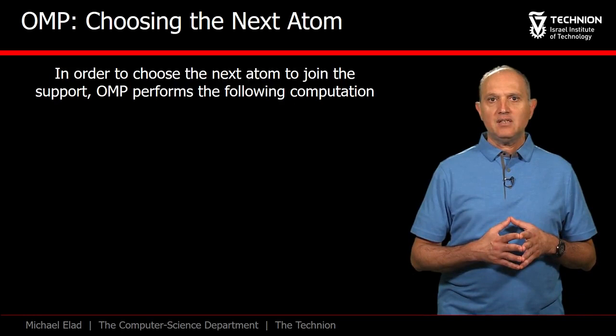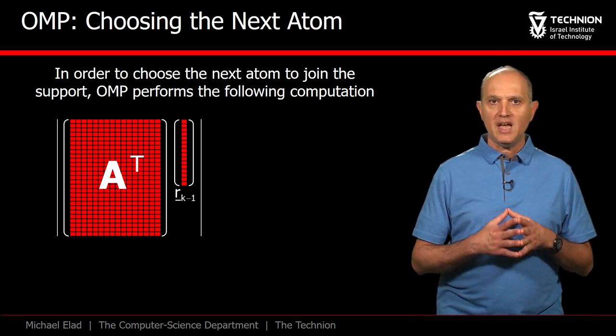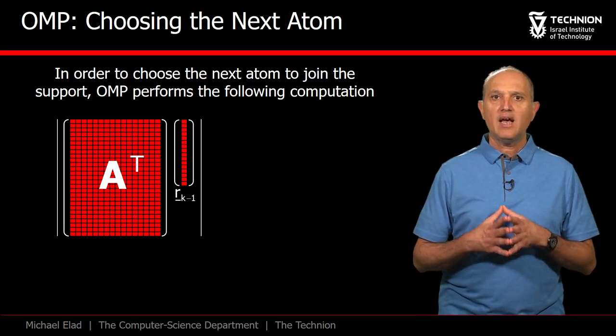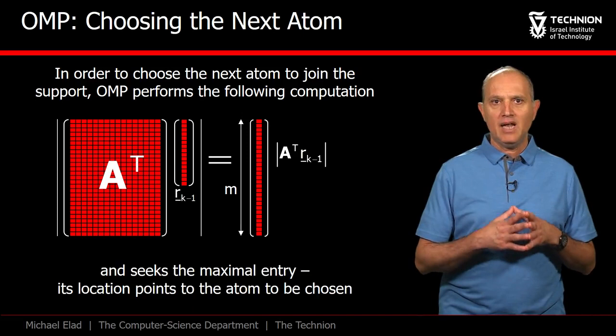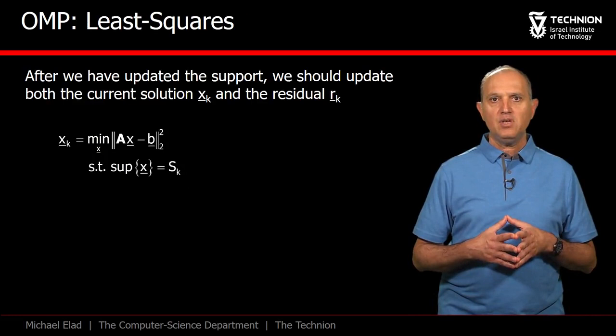That means that the choice of the next atom in the OMP can be done in this way. Take A transpose and multiply by the current residual Rk minus 1, and take the absolute value. The resulting vector is of length m, and its maximal absolute entry points to the atom to be chosen.